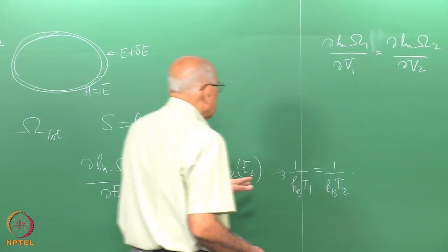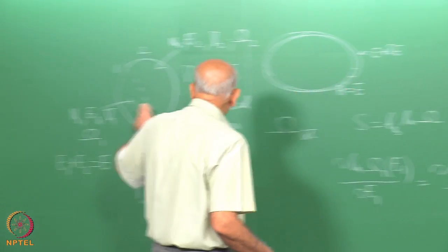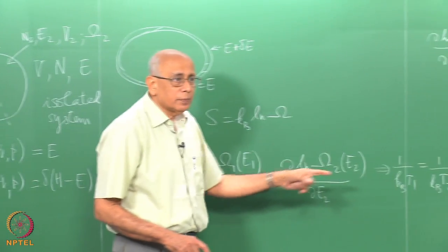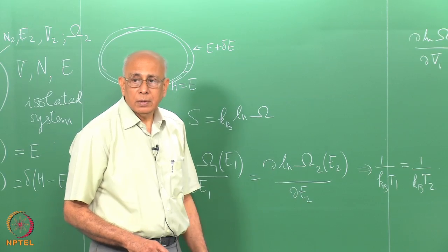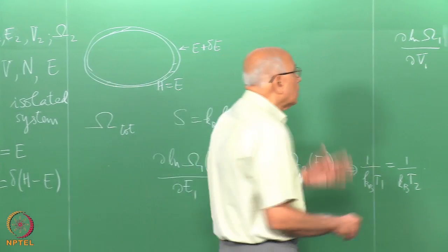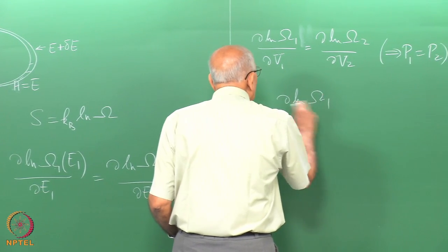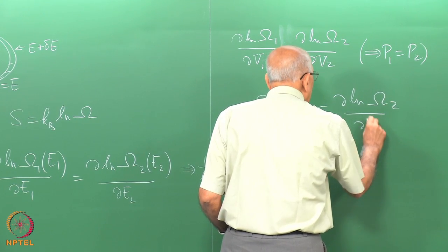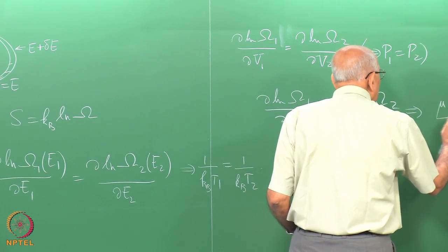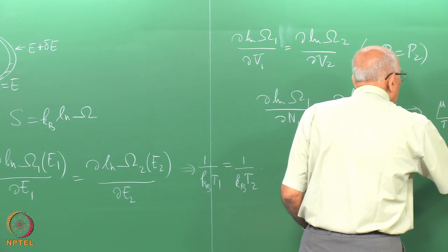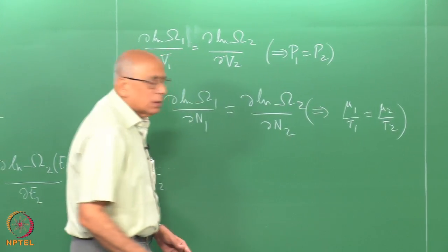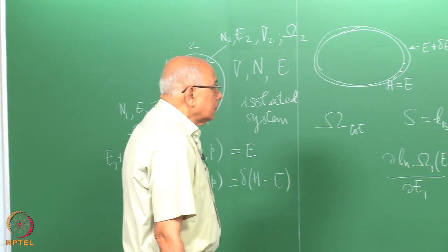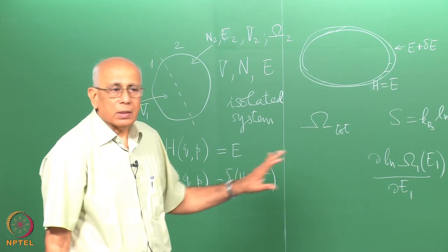Coming back to the microcanonical ensemble: the fact that the two parts of the system are in equilibrium with each other immediately tells you that temperatures must be equal, pressures must be equal, and chemical potentials must be equal. The condition ∂ ln Ω₁/∂N₁ = ∂ ln Ω₂/∂N₂ implies μ₁/T₁ = μ₂/T₂, and since T₁ = T₂ already, the chemical potentials are also equal.